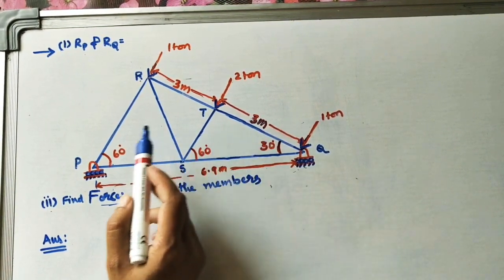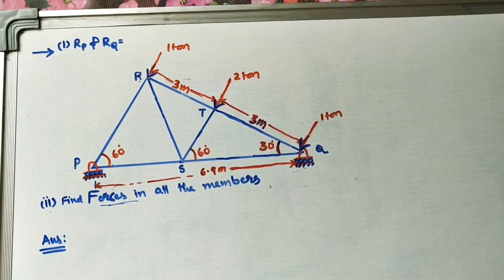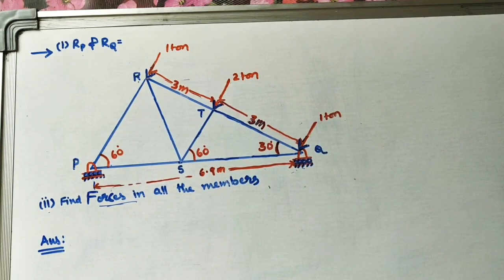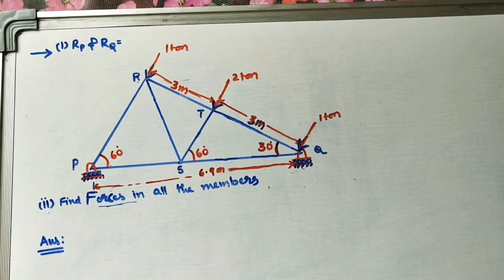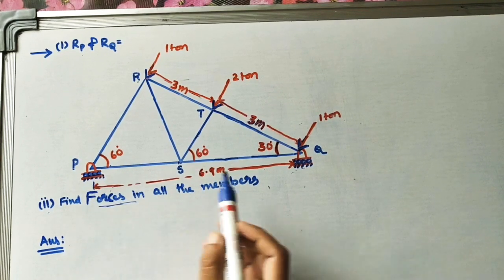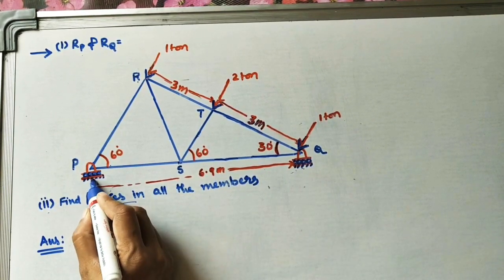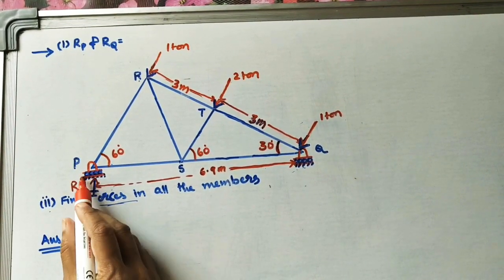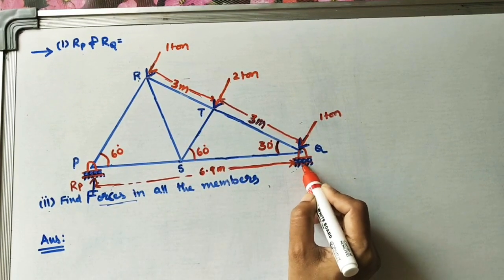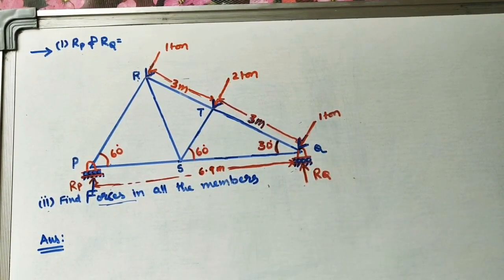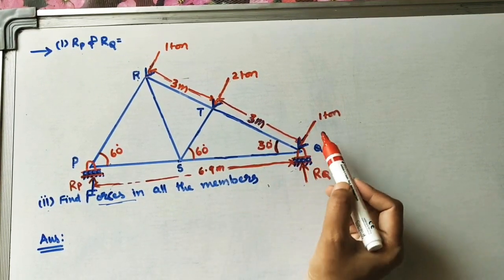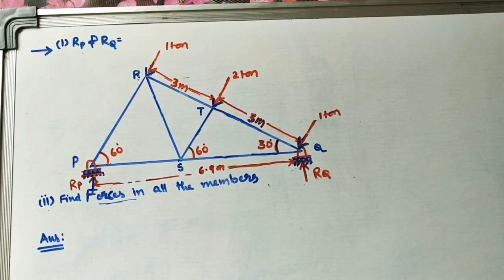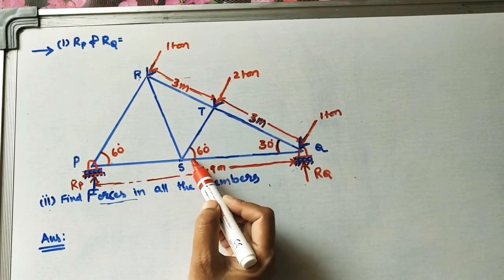For equilibrium conditions we apply three formulas: Sigma FH = 0, Sigma FV = 0, and Sigma M = 0. Initially I will take vertical forces. Because of roller supports, the reaction at P is Rp and the reaction at Q is Rq. These are vertical reactions, and the applied forces are perpendicular to the Rq line.